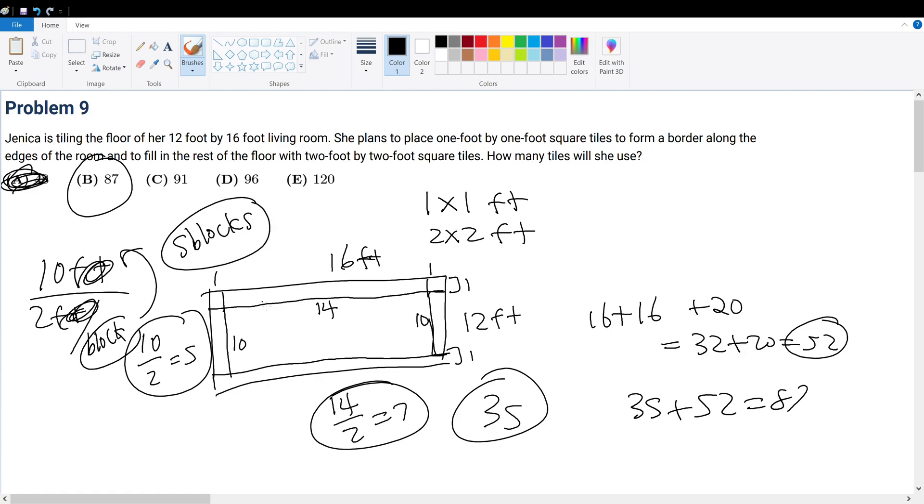But how many columns do I need? I have 7 columns right here, because I have 14 foot divided by 2 foot per block.